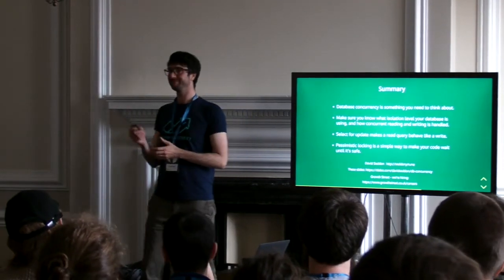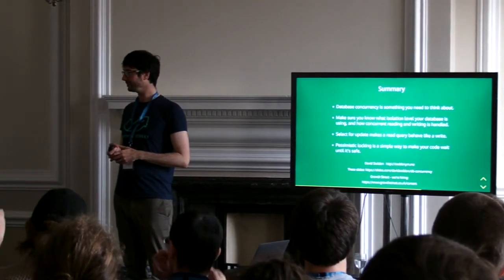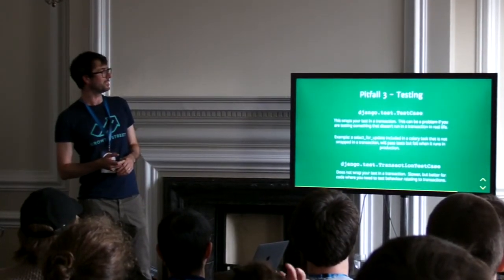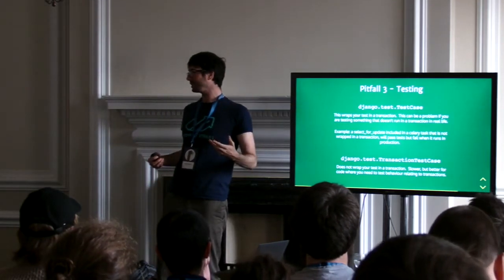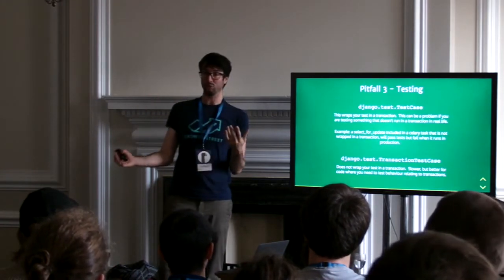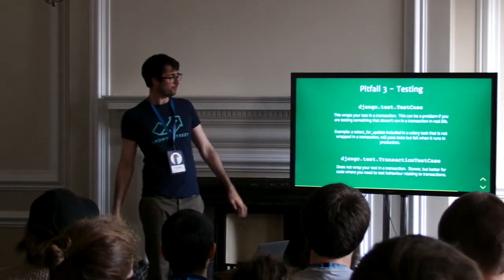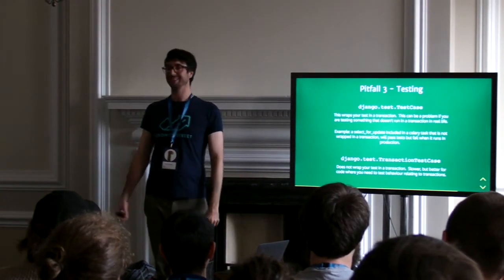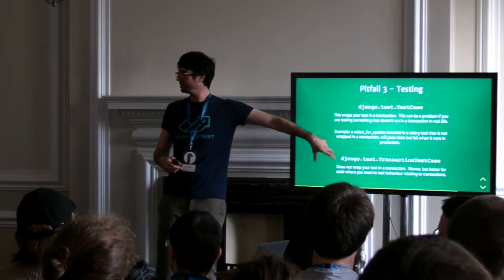How do you unit test when using transaction.atomic? Django's default test case wraps all your stuff in a transaction, so you can have a situation where a select for update isn't wrapped in the transaction and it will still pass the unit test — you'll only find out in production. TransactionTestCase is a confusingly named test case which doesn't wrap into transactions — it does a full database truncate — so you can test transactional stuff using that one.